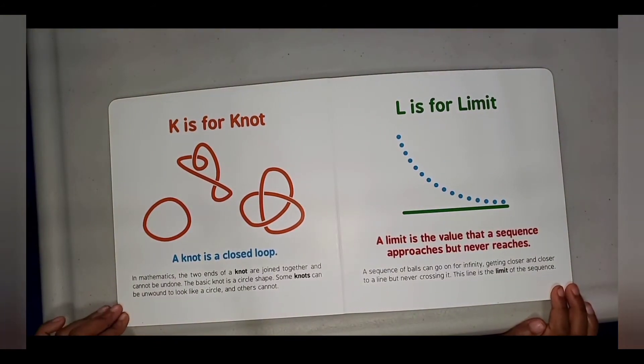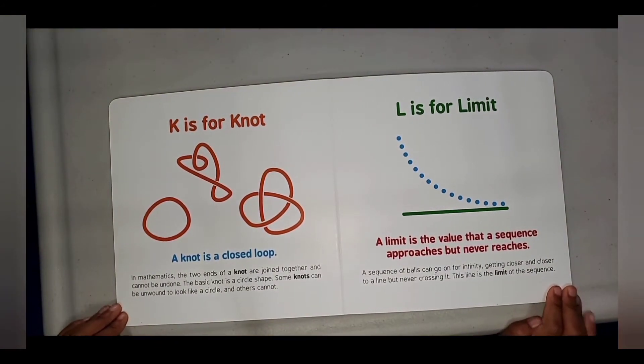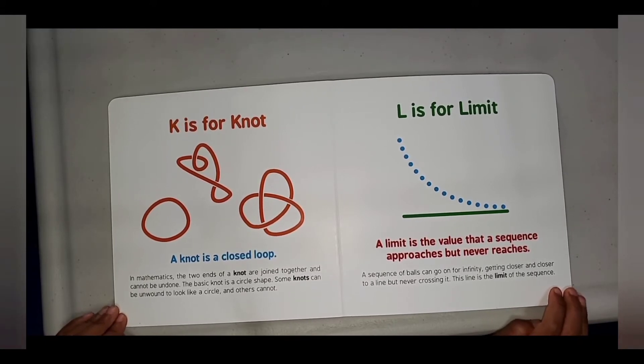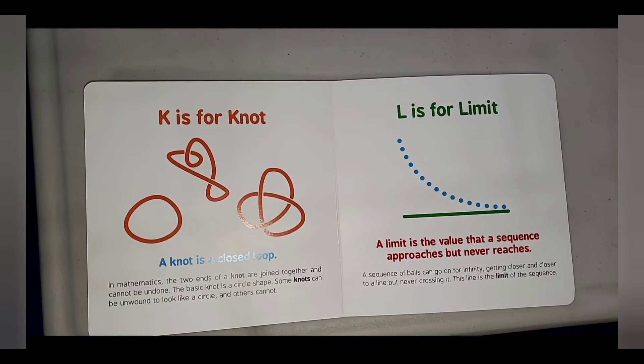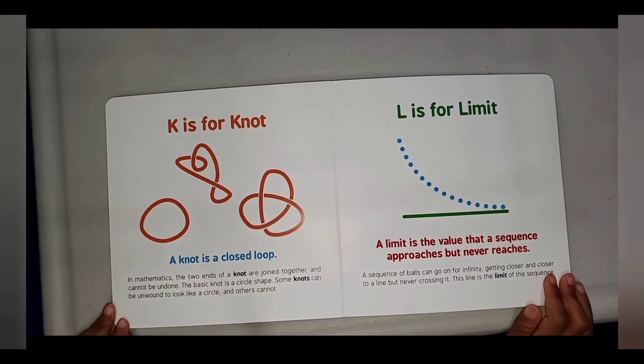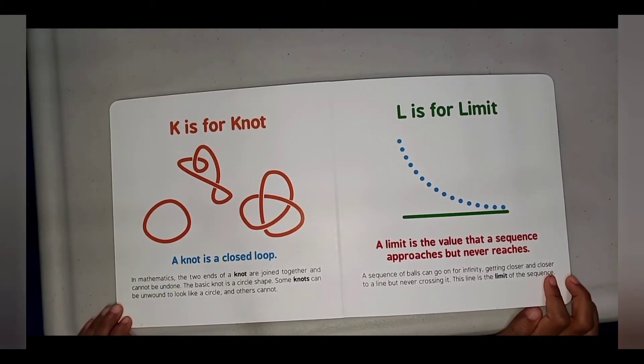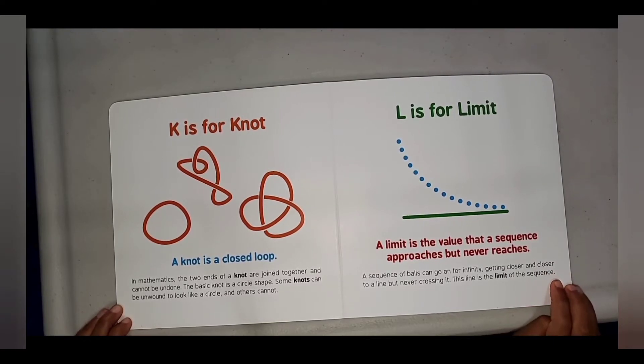K is for Knot. A knot is a closed loop. In mathematics, the two ends of a knot are joined together and cannot be undone. The basic knot is a circle shape. Some knots can be unwound to look like a circle, and others cannot.